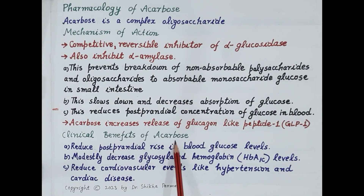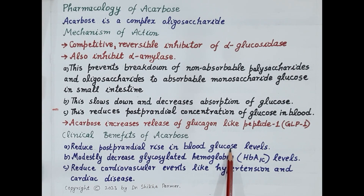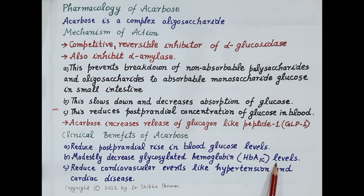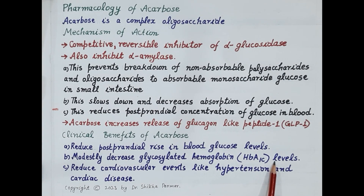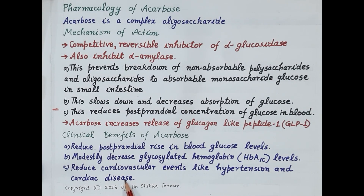Let's summarize the clinical benefits of acarbose. Acarbose reduces post-prandial rise in blood glucose levels by preventing digestion and breakdown of carbohydrates in food. As it prevents increase in blood glucose, acarbose modestly decreases glycosylated hemoglobin (HbA1c) levels. Furthermore, by preventing rise in blood glucose, acarbose reduces occurrence of cardiovascular events like hypertension and cardiac diseases in type 2 diabetes mellitus.